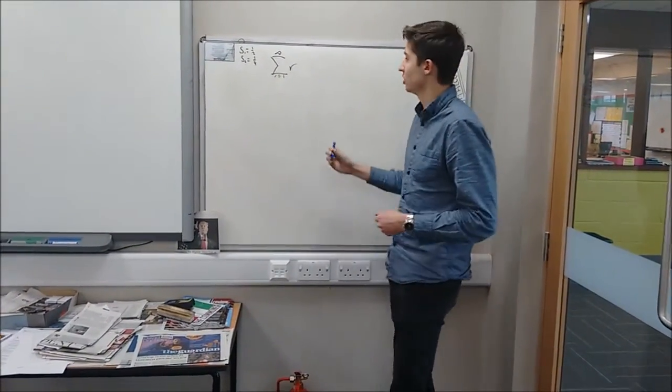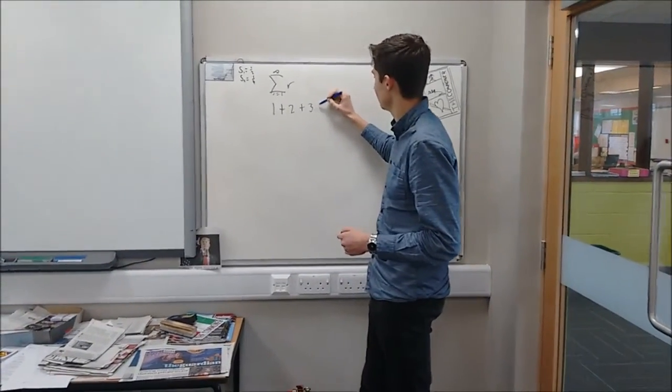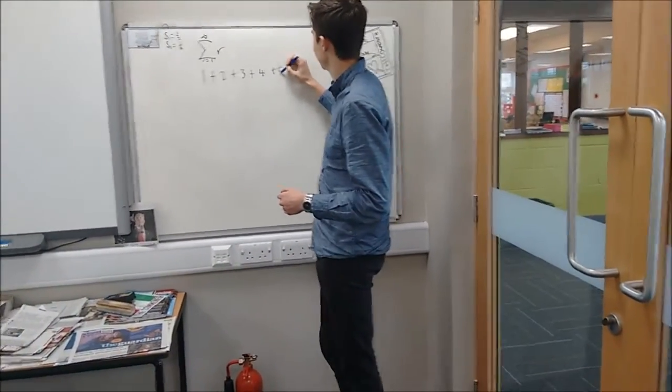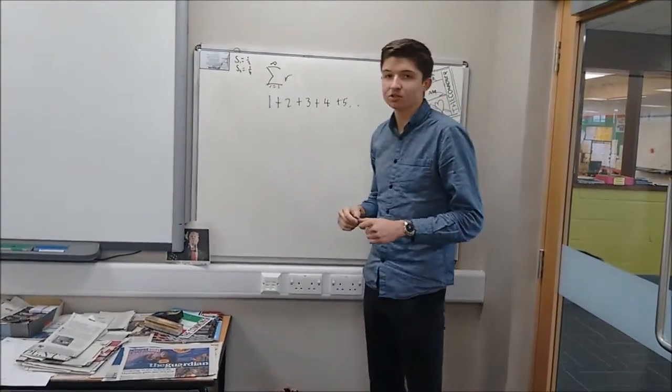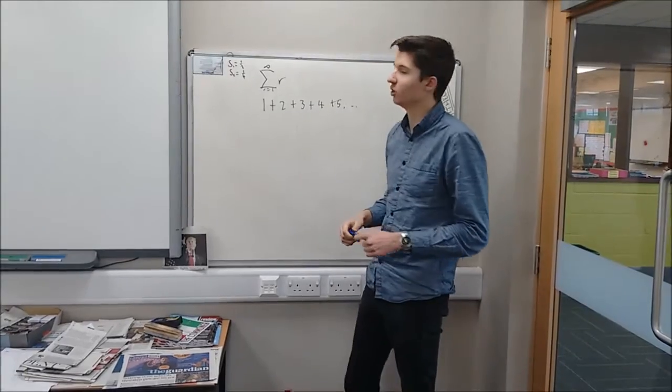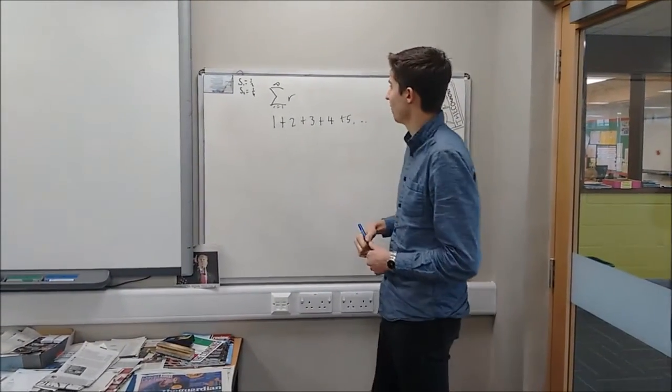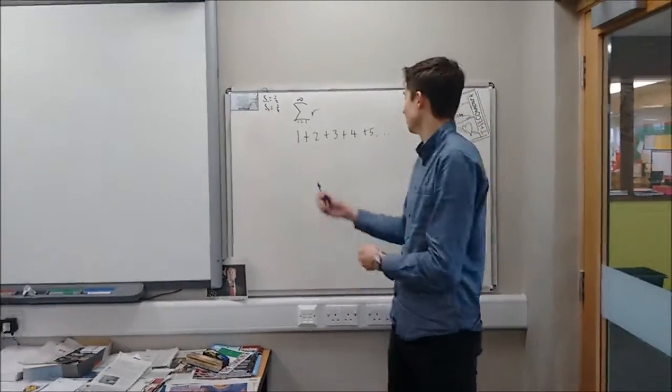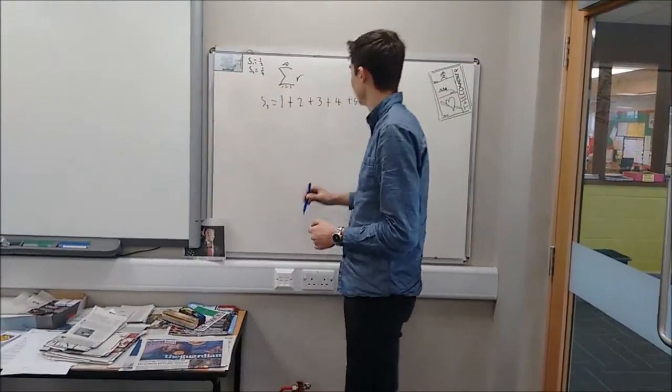We're going to try and figure out what that is, which is 1 plus 2 plus 3 plus 4 plus 5, all the way to infinity. The series does diverge. It doesn't converge on a number, but we can represent it mathematically with a fraction. Now we've got to this equation here, we're going to call this one S3, the final one.